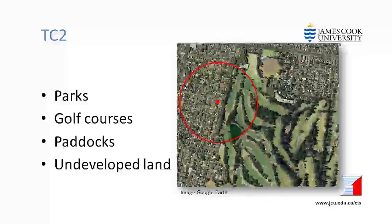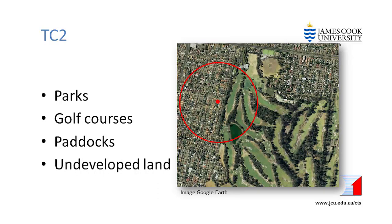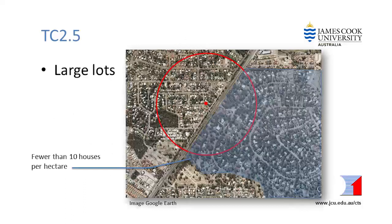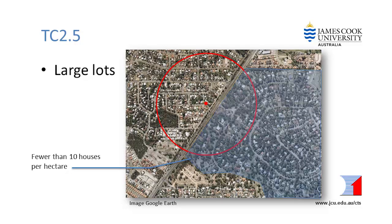Large open spaces without many obstructions such as golf courses, parks and paddocks are all TC2. If they are larger than 250,000 square metres — which is the equivalent to 500 metres by 500 metres — and any part of them is within 500 metres of the site, then the site is TC2. Large lots with less than 10 houses per hectare are terrain category 2.5. If this type of development is within 500 metres of the site, then the site is TC2.5.